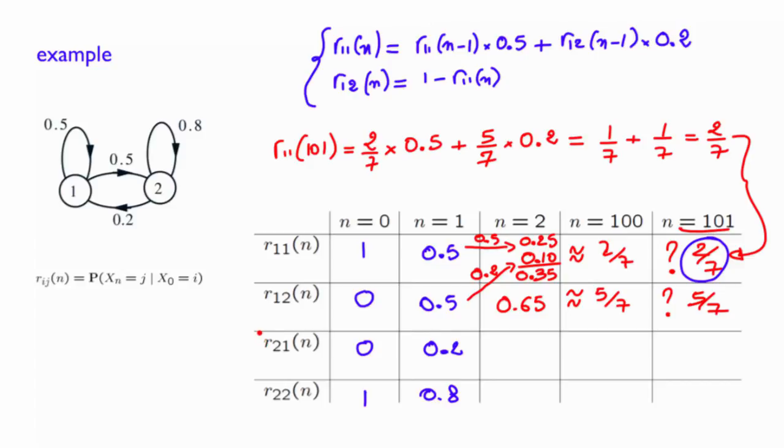Assume now that you want to do the same calculation for r21 and r22. In other words, you start in state 2 and you're interested in knowing the evolution of these r21 of n and r22 of n as a function of n. Again, I will let you do it. But I can tell you that these probabilities will also seem to converge to a constant and in fact will converge to something that is exactly the same, 2 over 7 here and 5 over 7 here.